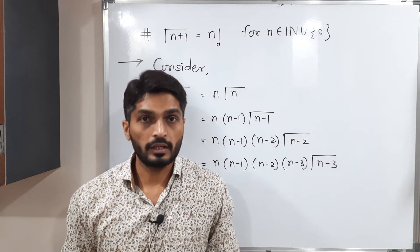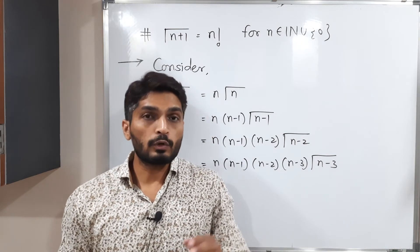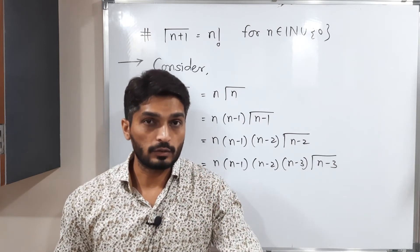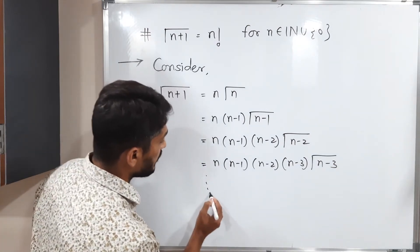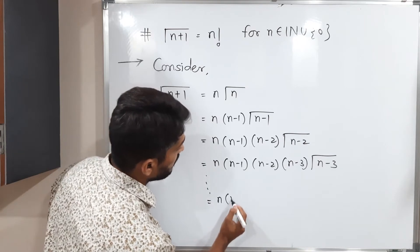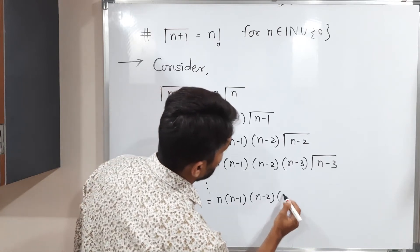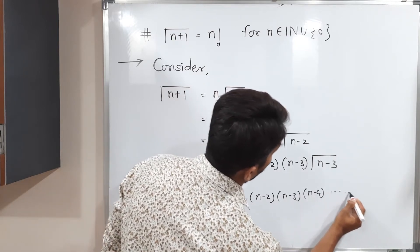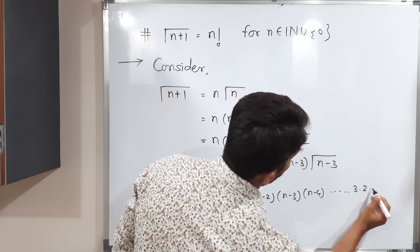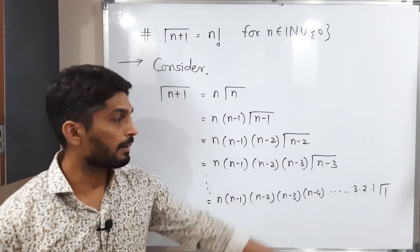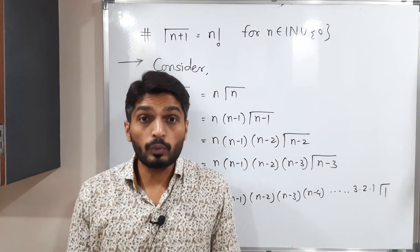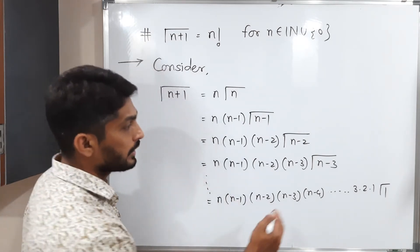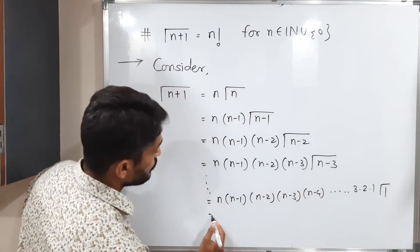If we keep applying the property repeatedly, we go back step by step and stop at γ(1). So finally we have n·(n−1)·(n−2)·(n−3)·…·3·2·1·γ(1). We know from our previous video that γ(1) = 1.